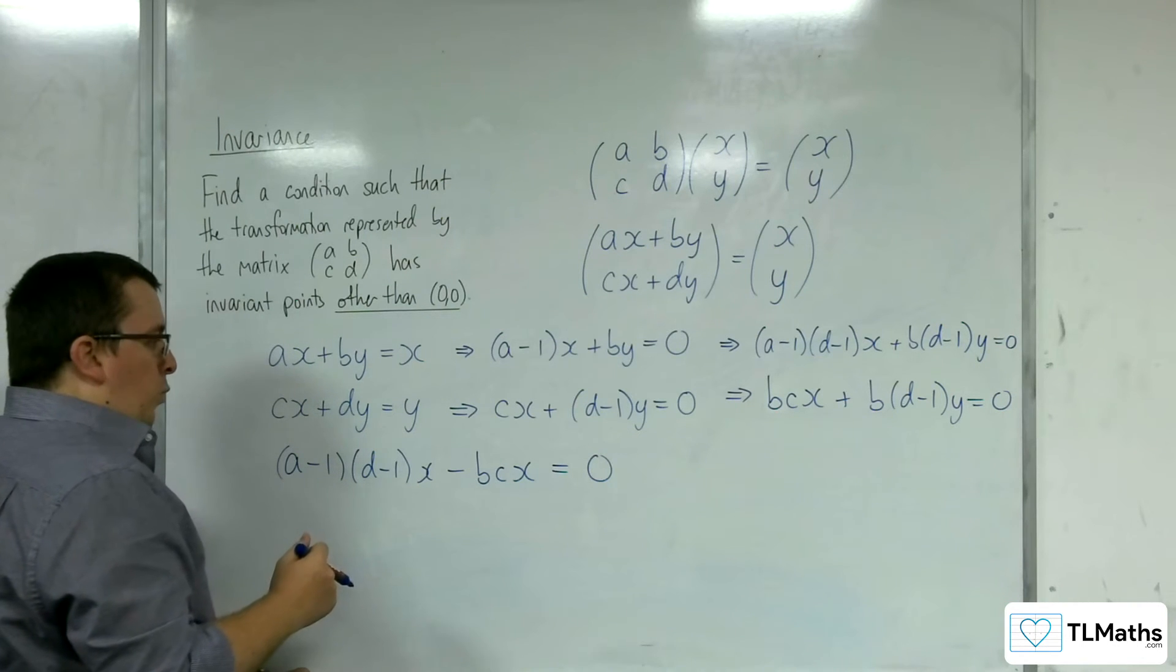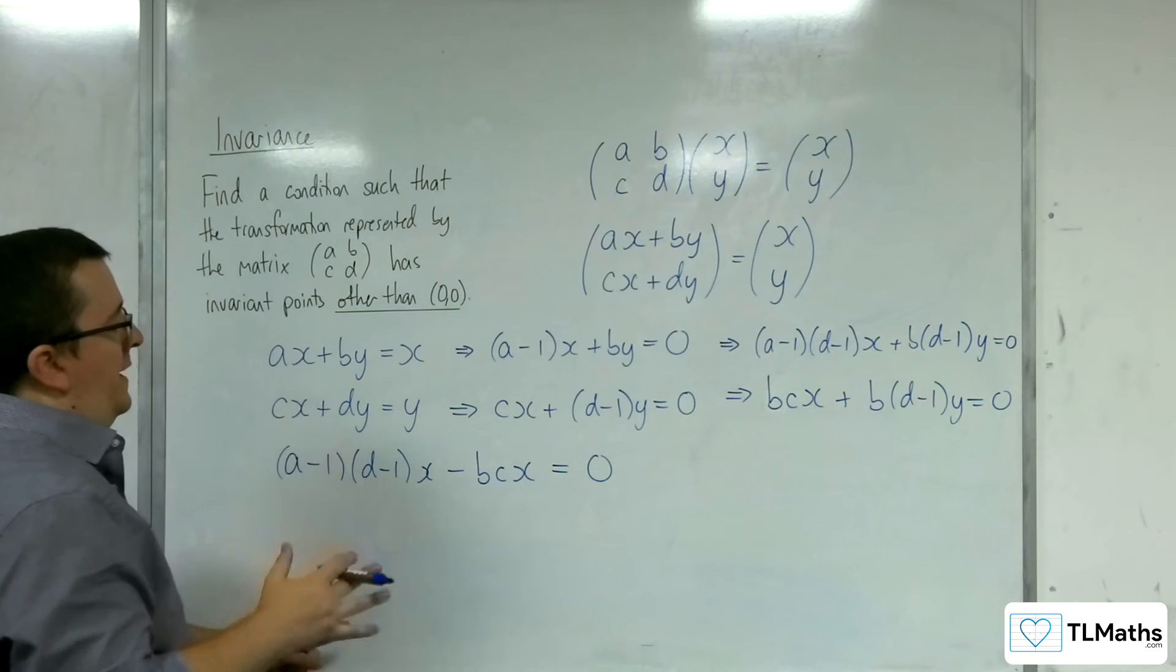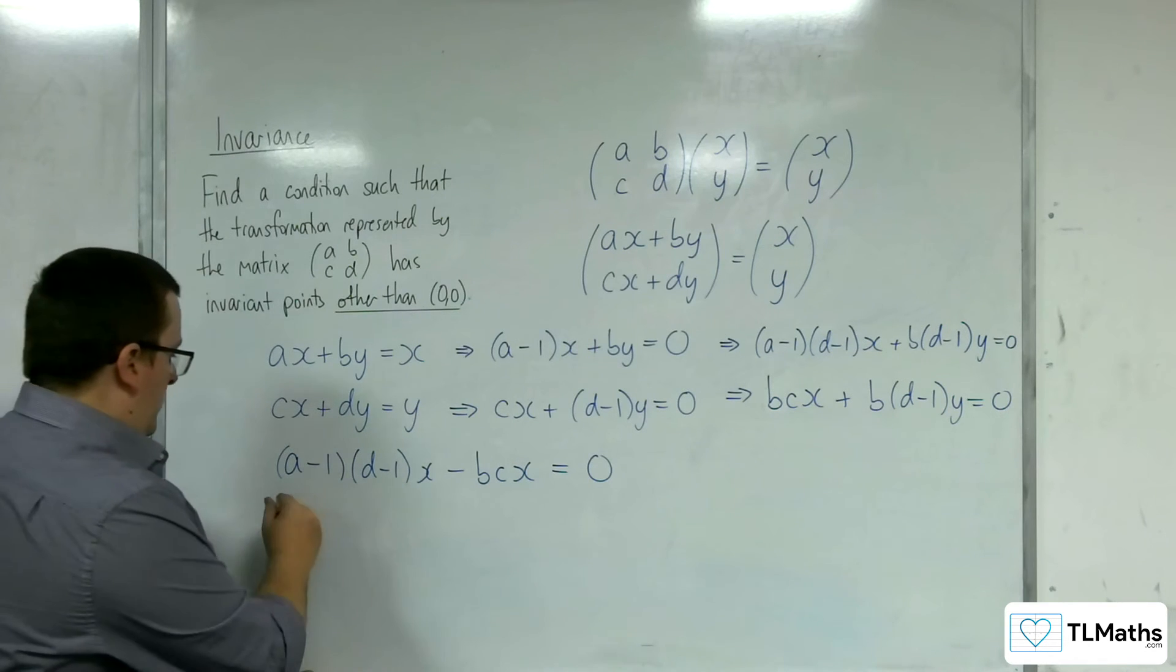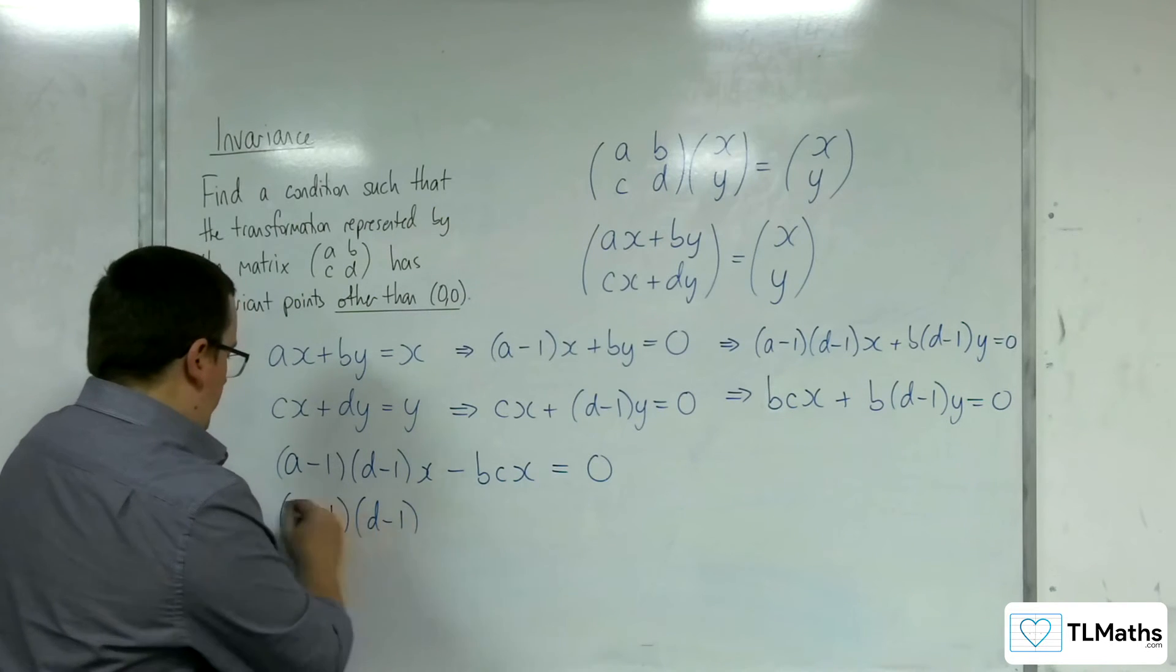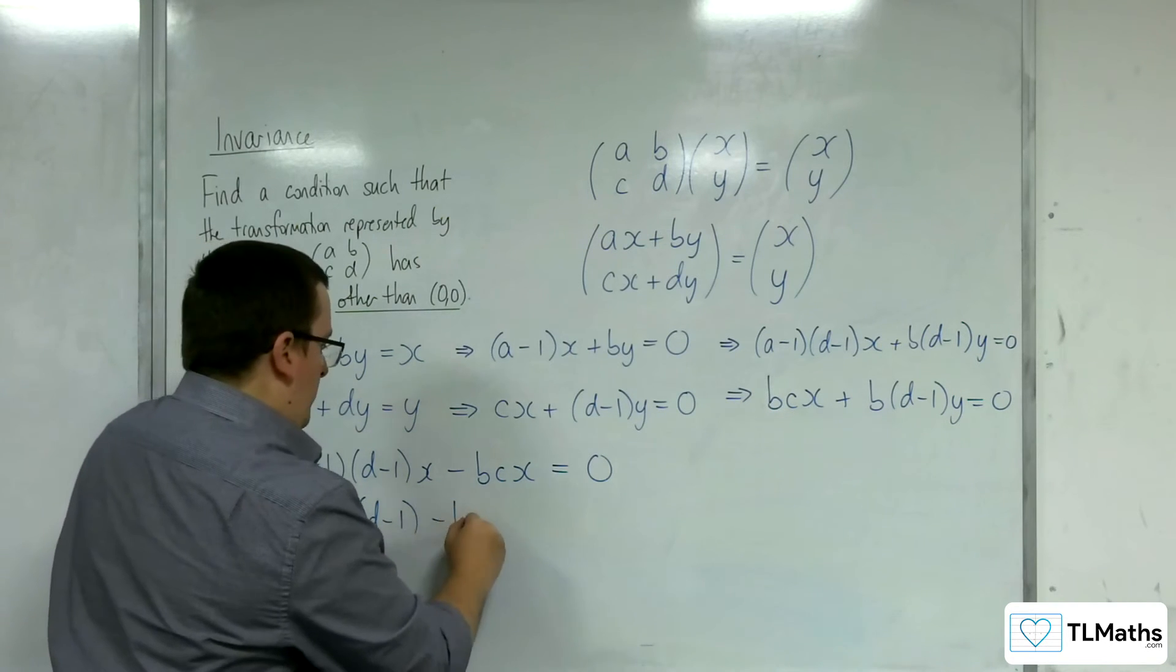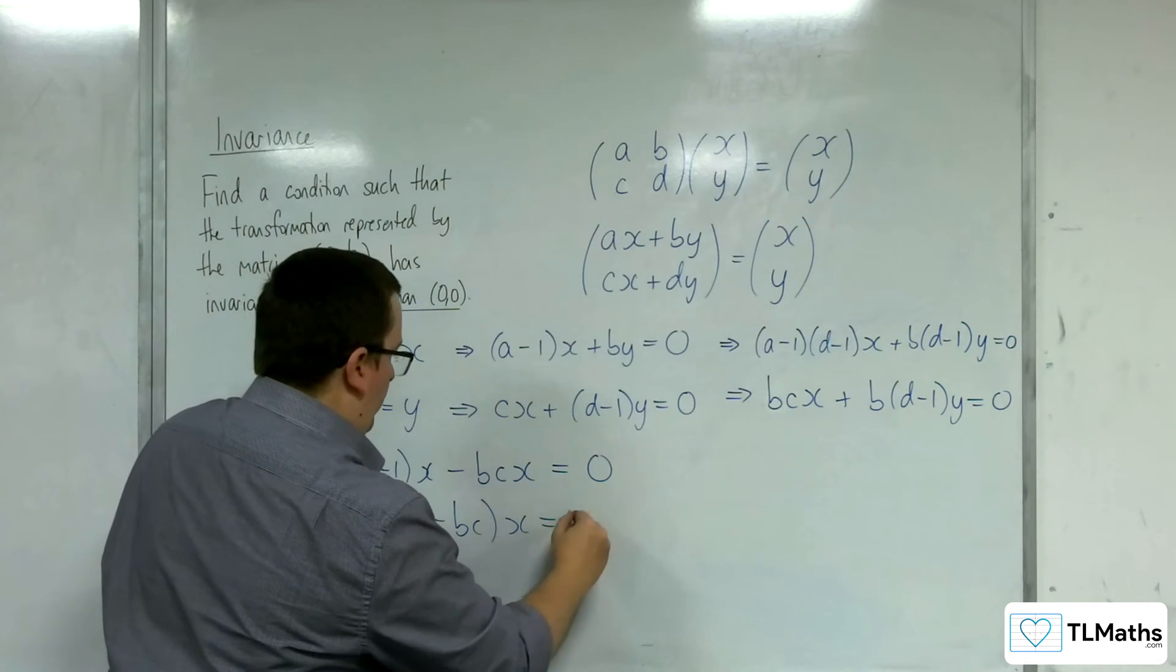What I can do now is if I factor out the x, then I would have [(a-1)(d-1) - bc]x equals 0.